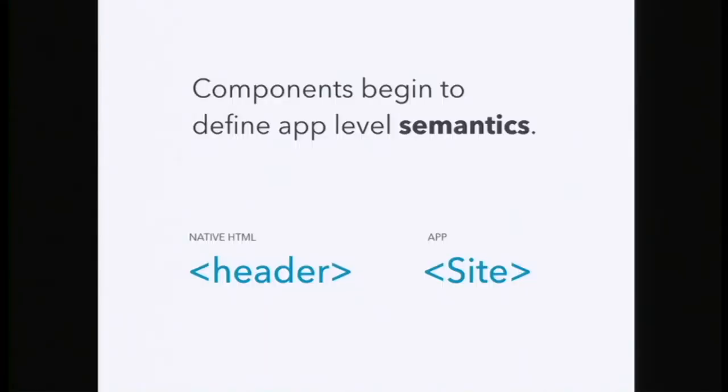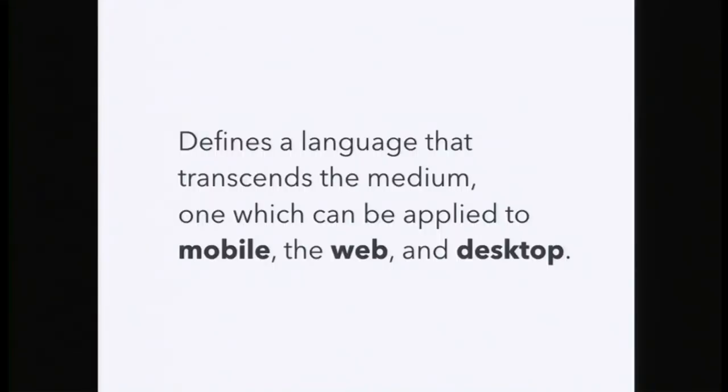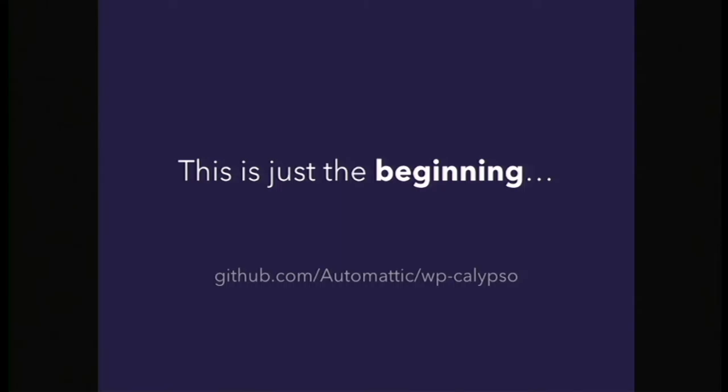One of the things components also produce is another layer of semantics. We don't just have basic native HTML describing the document — now we have app-specific components you can use to describe an interface. And this transcends the actual medium — it's much easier to collaborate across mobile web, desktop, and mobile, using this sort of syntax. Because even if the actual implementation differs, it allows you to describe an interface in terms of its semantic pieces. We're really just scratching the surface with React and how it can help move into more interactive experiences — Calypso was just open-sourced, and it's totally up to the community to see what we can learn from it and where we can take it.